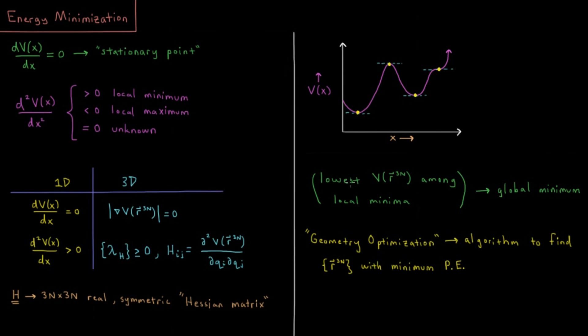So if we see that we have a situation where the magnitude of the gradient vector is zero, and we have a Hessian where all of our eigenvalues are positive numbers, then what we have is a local minimum. And if you are the lowest value of potential energy among all local minima, then you are what is called the global minimum.